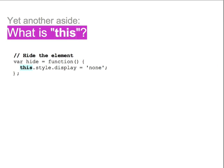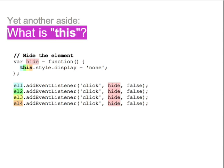Did you notice the keyword 'this' in those examples of changing the style? This is a special keyword in JavaScript that gives a reference to the object that owns the function or method. For event listeners, 'this' refers to the node that the event listener was originally attached to. This is useful because we can write a single event listener, attach it to multiple nodes, and 'this' will refer to whichever node was clicked when the listener function is called.